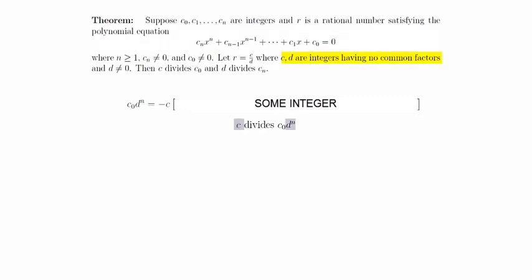Remember that c and d have no common factors, which means that c must divide c₀, and that proves the first part of the theorem.